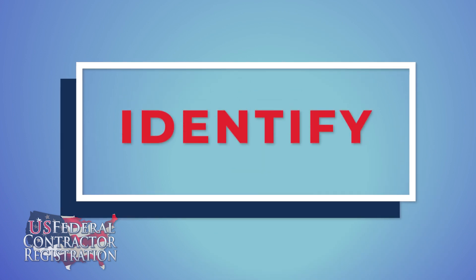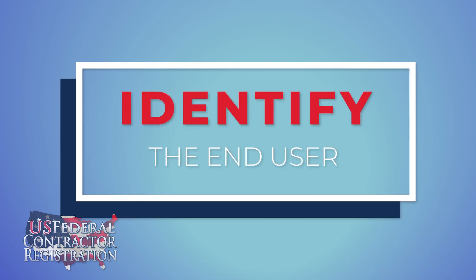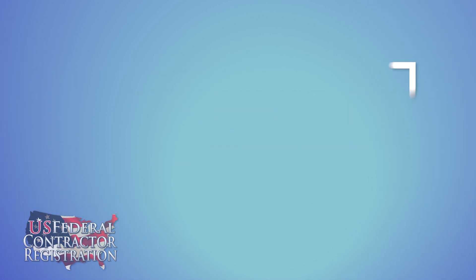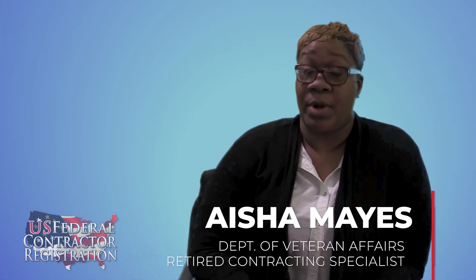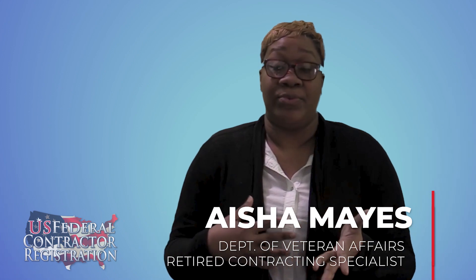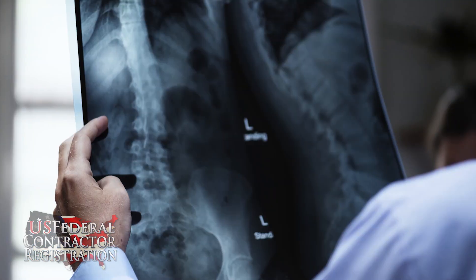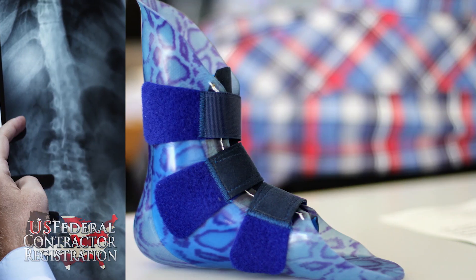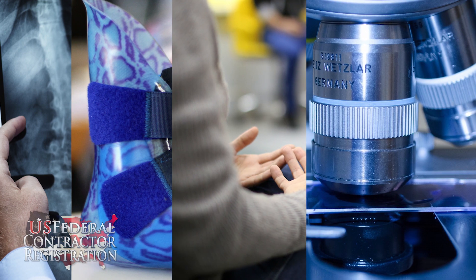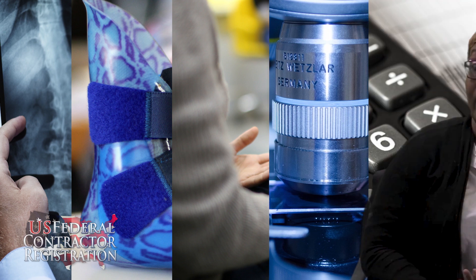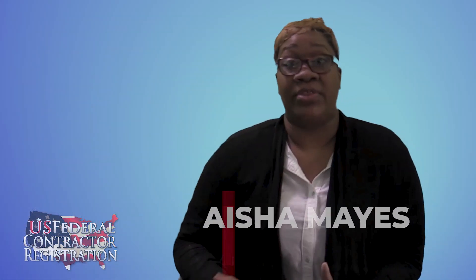When trying to determine who your end user is, it would be a great idea to look up your local VA clinic or local VA hospital, take a look at the different departments that they have, and look up who those department heads are. That could be radiology, prosthetics, psychology, a research service department, or someone in administration, because the department heads essentially are the decision makers.